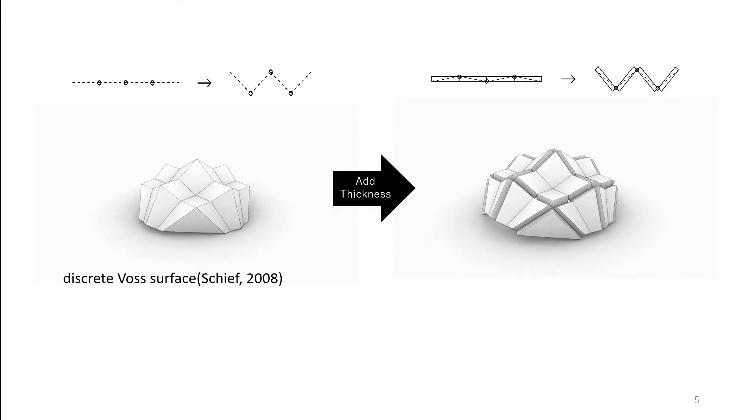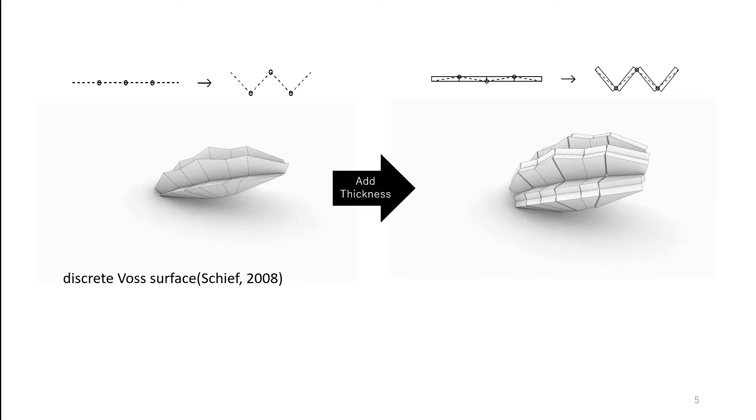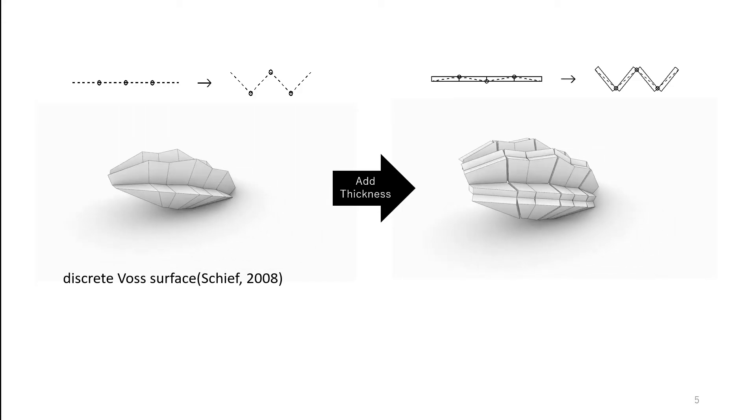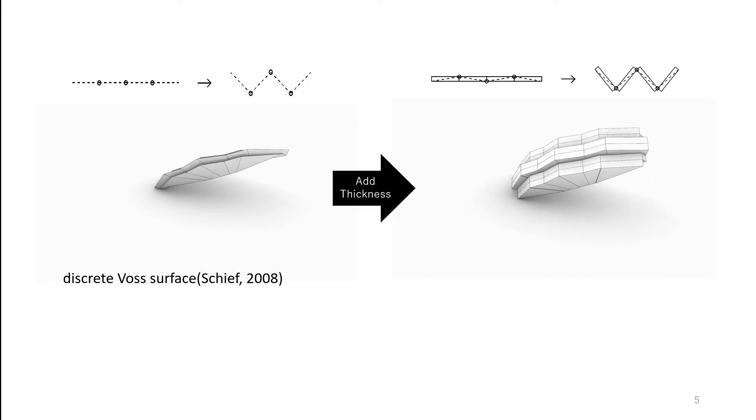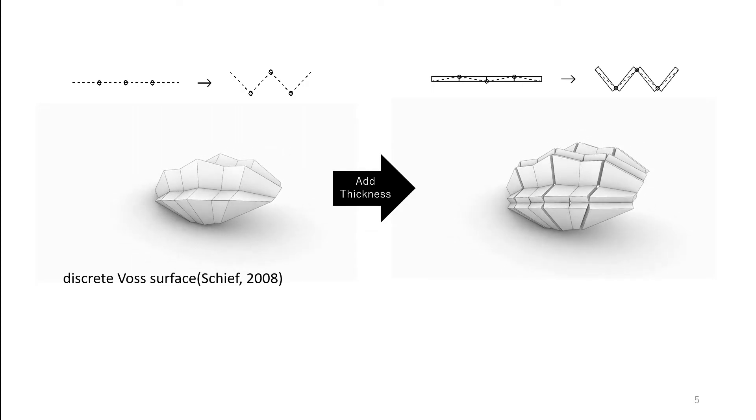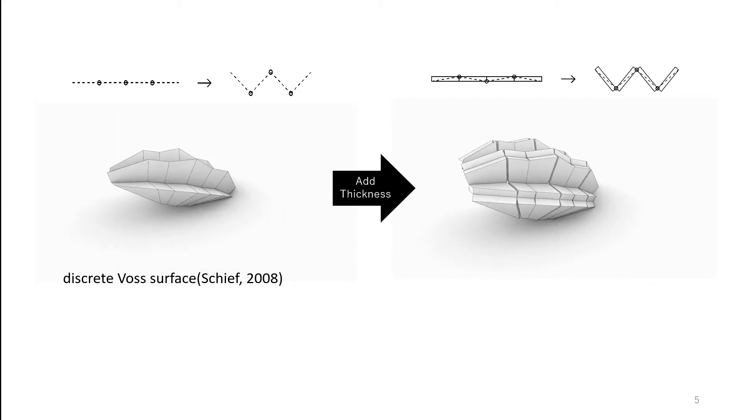We use a mesh composed of degree 4 vertices with equal opposite sector angles. Such surfaces are known as discrete Voss surfaces, and known to be rigid foldable. The surfaces are not necessarily developable, but have one DOF mechanism that folds flat.